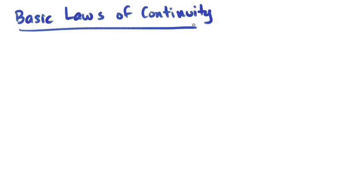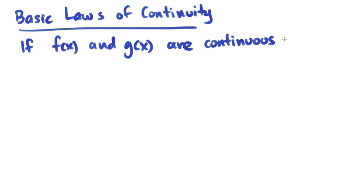There are a number of laws of continuity. There are four basic laws. And all of them are based on this premise. If you've got two functions, f of x and g of x, and those are both continuous at x equals c, then these functions are also continuous.